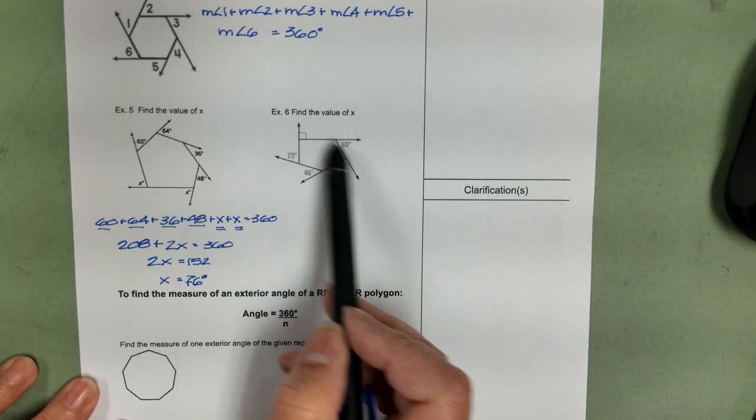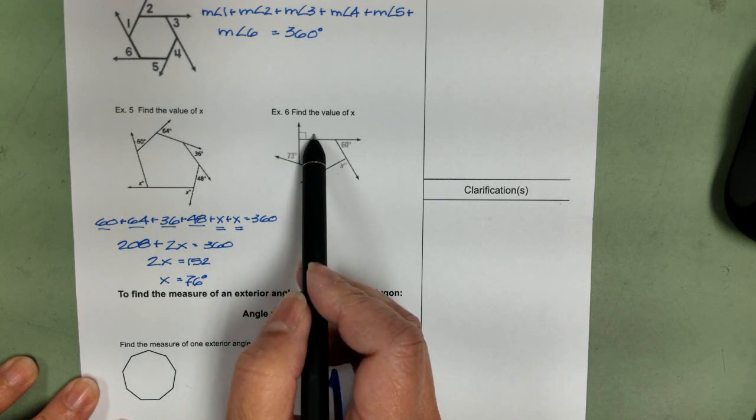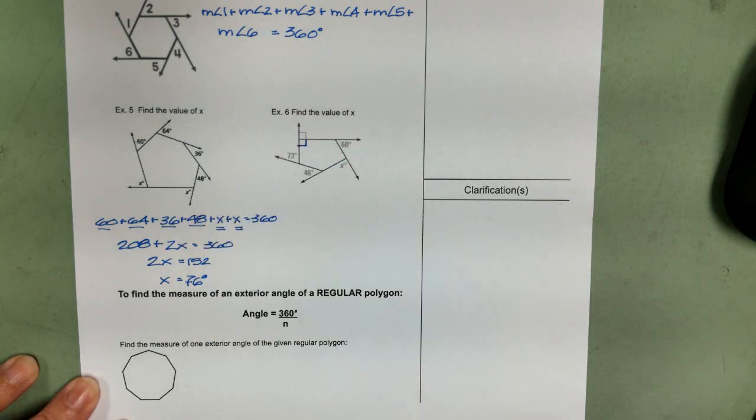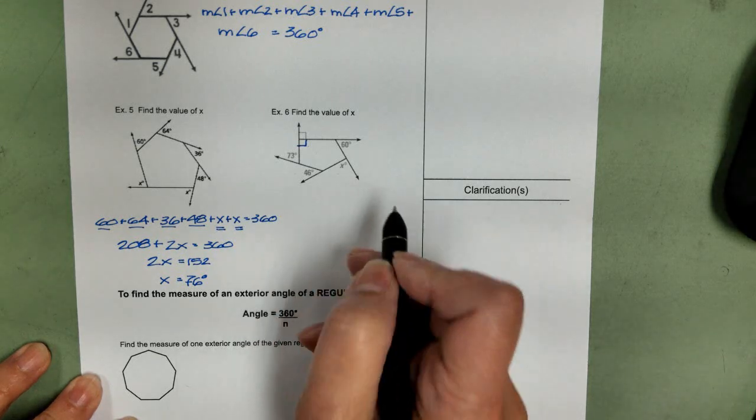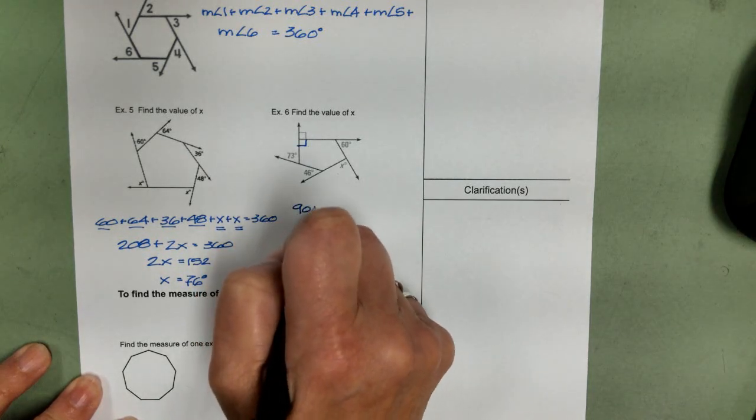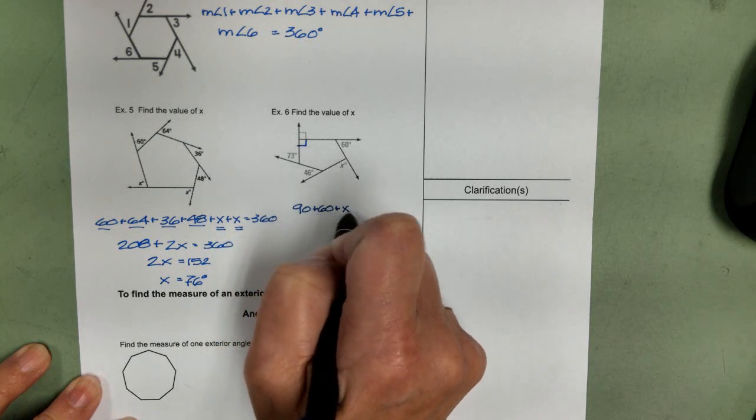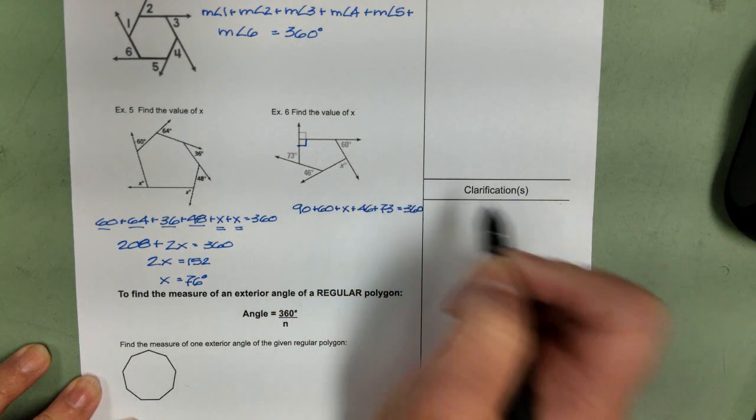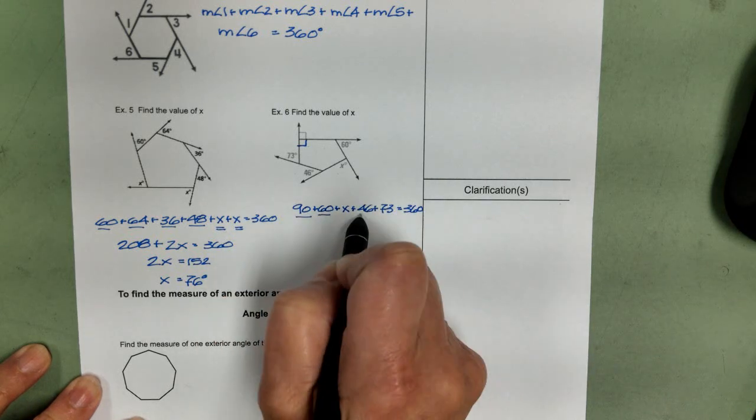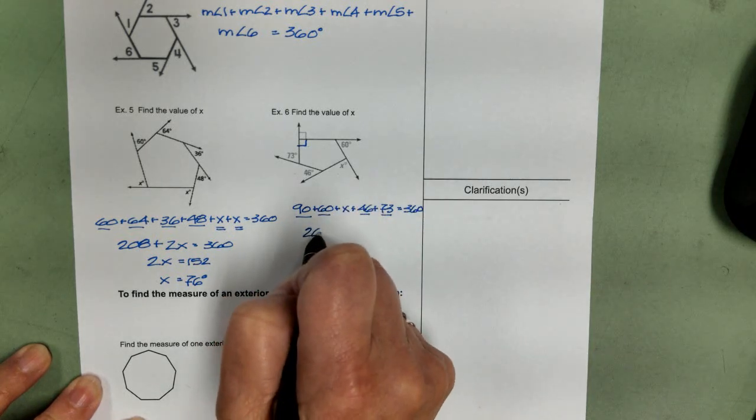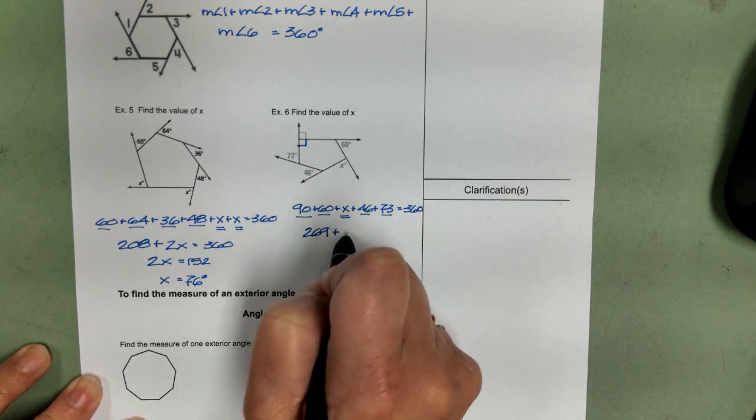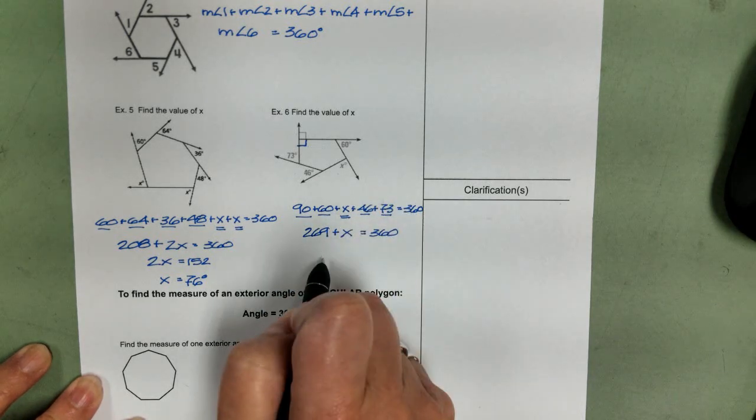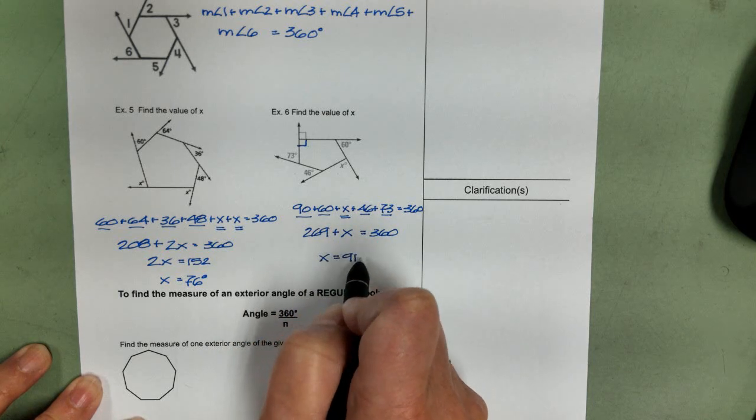Moving over here, we have one, two, three, four, five. Notice I have a box here. This is a right angle. It's also supplementary to this one. So this is also a right angle. And as we know, all right angles equal 90 degrees. So for this problem, we have 90 plus 60 plus x plus 46 plus 73 equals 360. Again, combine like terms. Start with the constants. 269. We have only one x equals 360. So when I subtract 269 from 360, we get x equals 91 degrees.